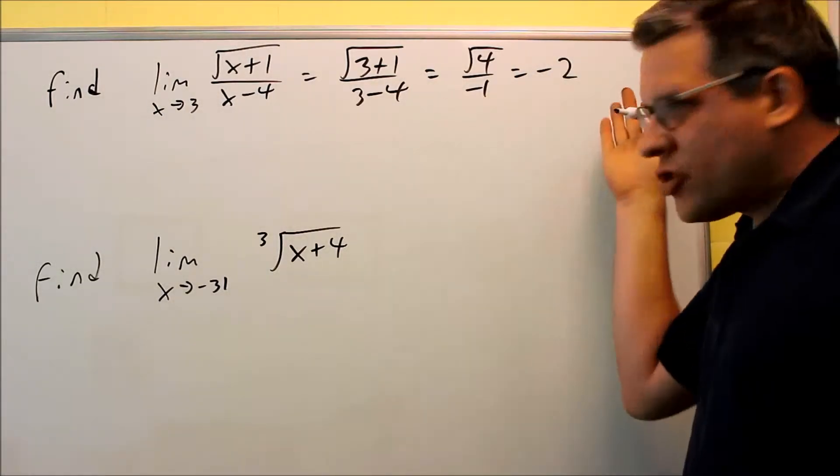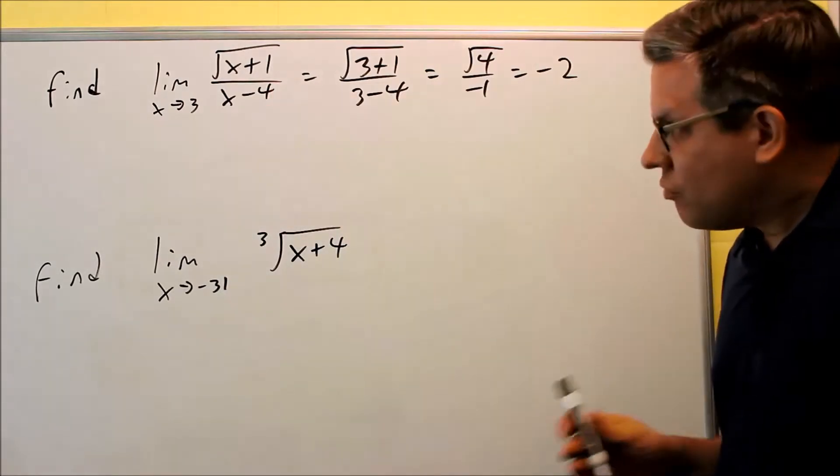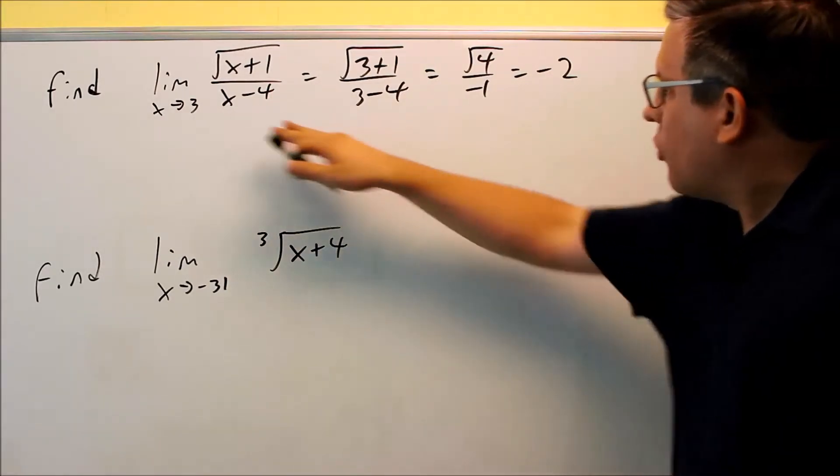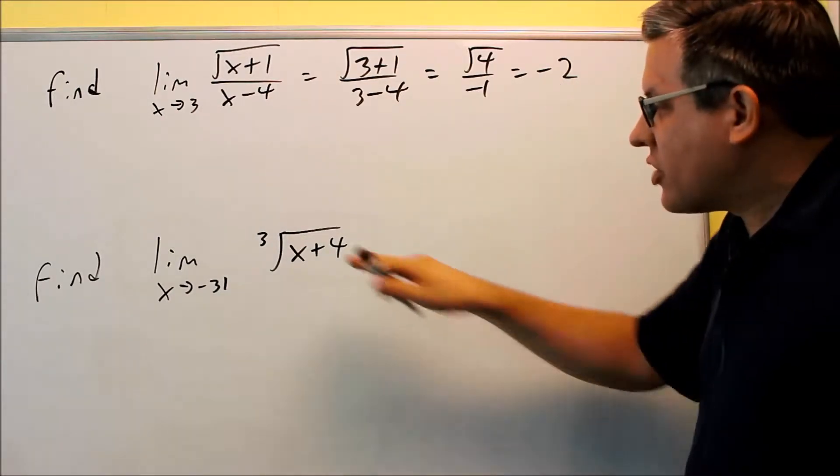So that one, there's no manipulation we had to work on because we're not dividing by 0. It gave us an answer so we're able to actually get negative 2 as the exact value on that one. Let's take a look at this one.